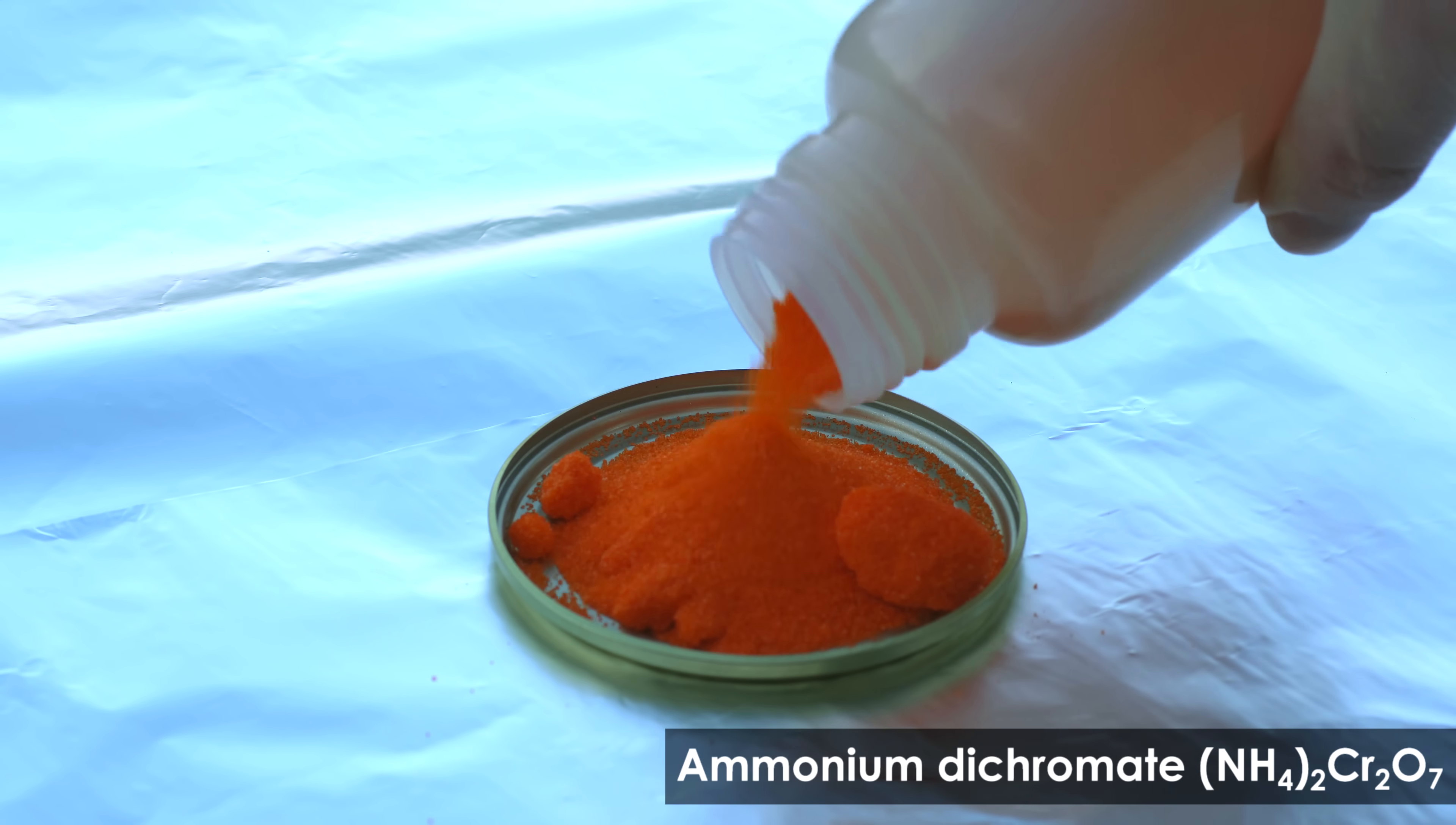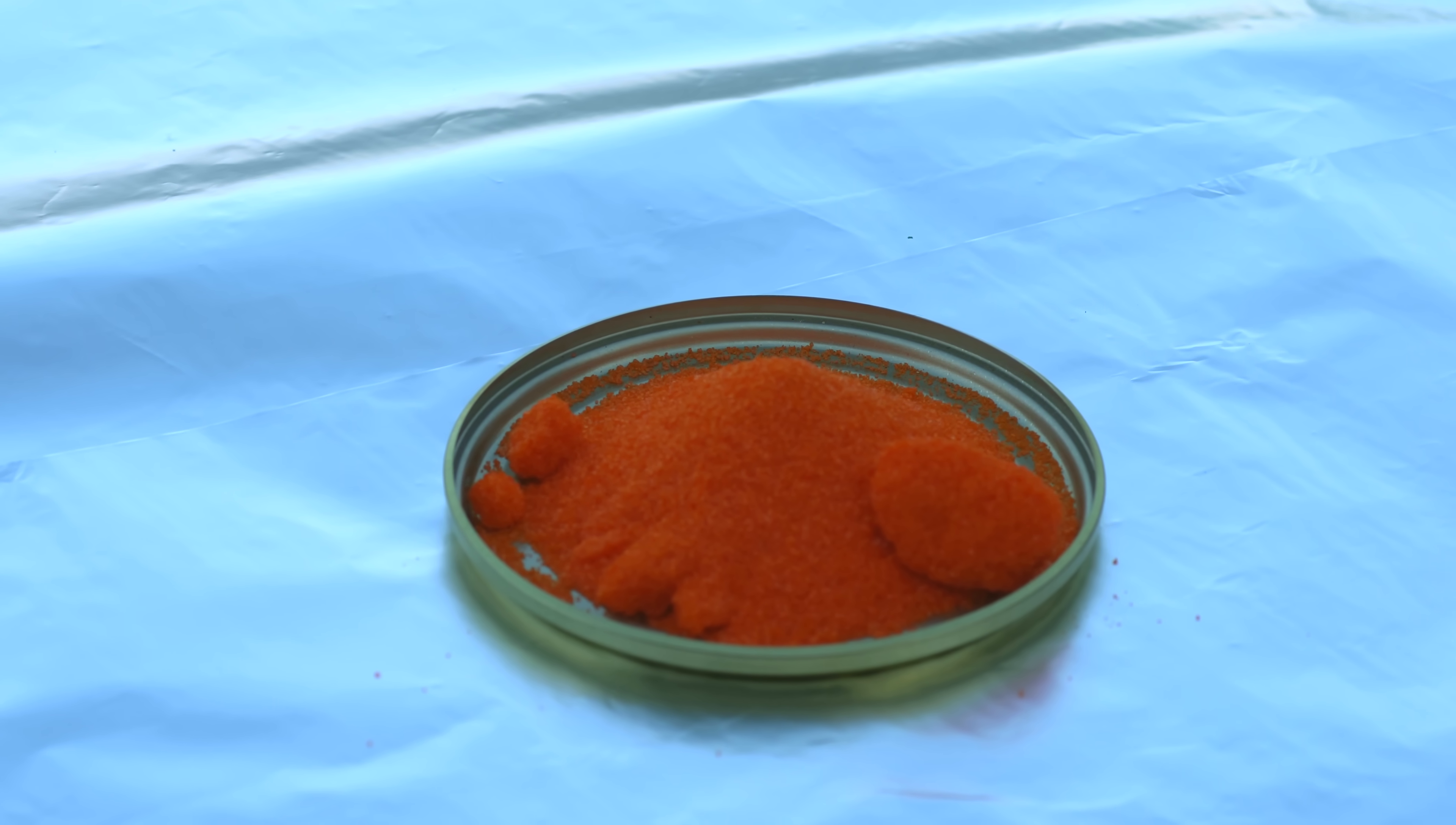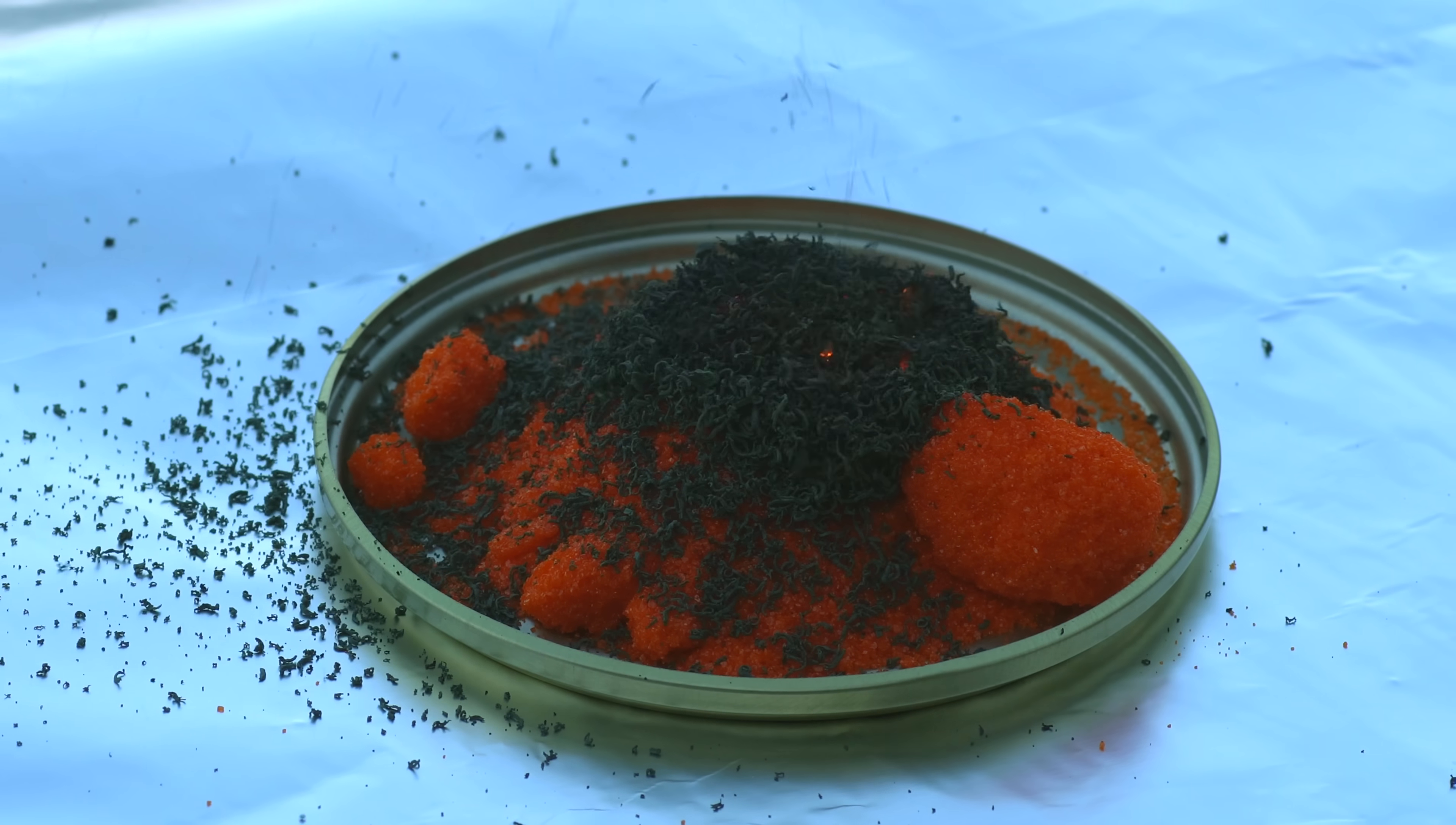In order to do it, let's take another orange chromium compound, ammonium dichromate, in which chromium also has an oxidation state of plus 6. Now, I'm igniting this orange powder, and what do we see?